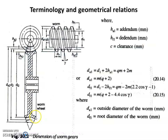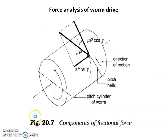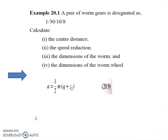In previous lectures we studied the basic part, and now we come to a numerical. The pair of Worm Gears is designated as 1 oblique 30 oblique 10 oblique 8. Calculate the center distance, the speed reduction, the dimensions of the worm, and the dimensions of the worm gear. This designation is in the form Z1 oblique Z2 oblique Q oblique M. So this 1 represents Z1, this 30 represents Z2, 10 represents Q, and 8 represents M.